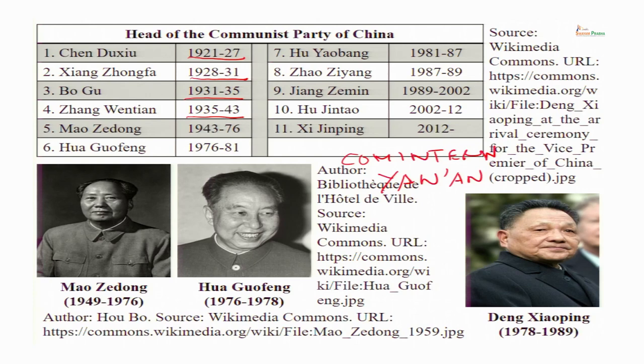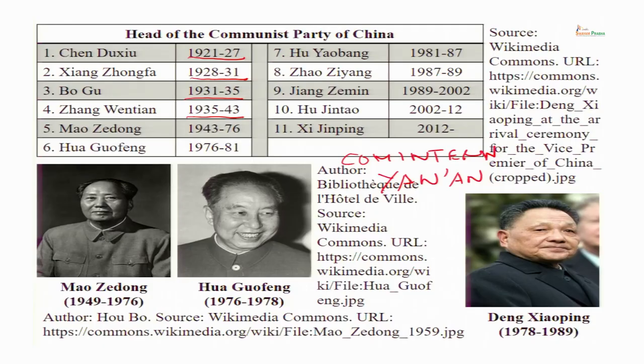He was also head of the state for more than a decade, but in 1959 he gave up that post to Liu Shaoqi. He remained the paramount leader nonetheless. So the head of state does not mean you are the most powerful leader in China. The primary requirement is you must have control over the party and the military.